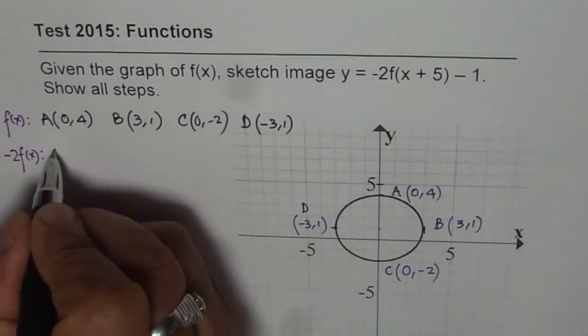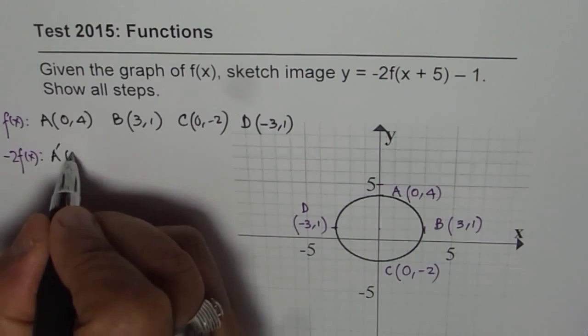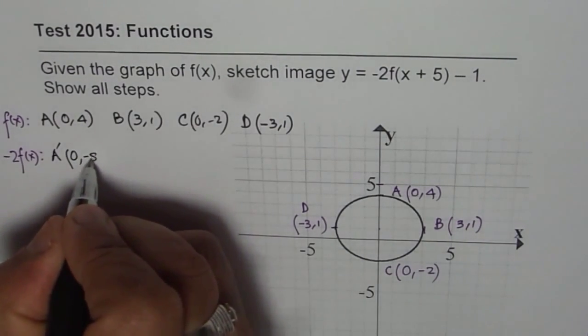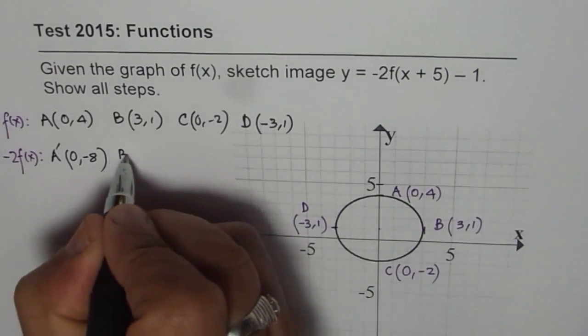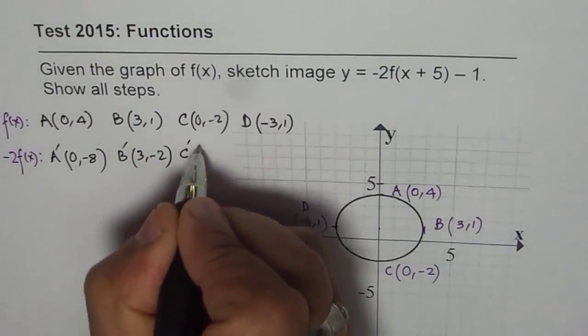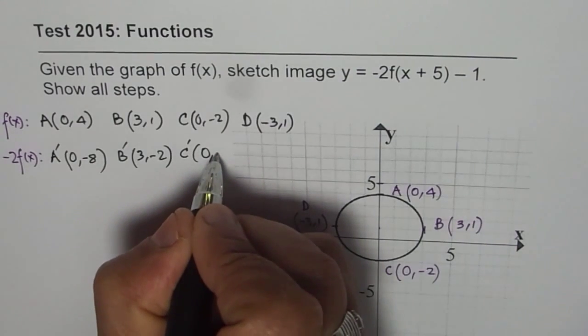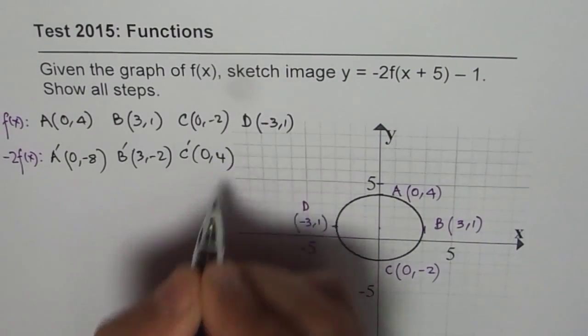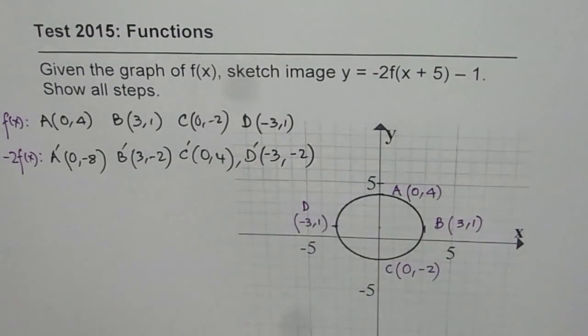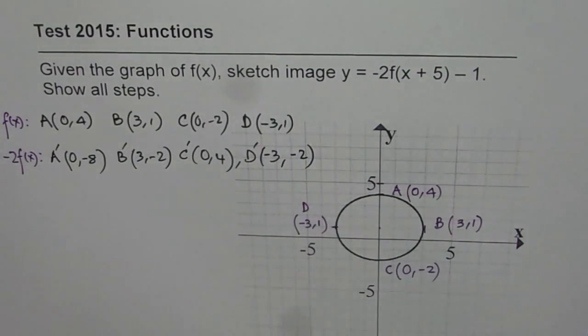So what we will do is we'll write A dash as x-points remain same. Multiply the y-point by minus 2. So we get minus 8. So B dash will be 3 minus 2. C dash will be 0. Minus minus becomes plus, so we have 4. And D dash should be minus 3 minus 2.